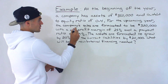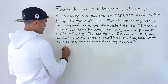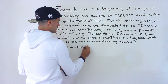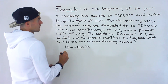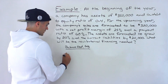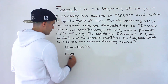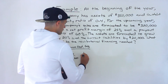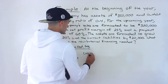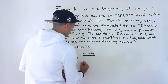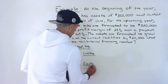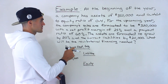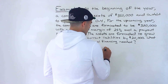Let's start with the beginning of the year balance sheet. We're told the company has assets of $350,000. Notice we're not given the actual numbers for the liabilities or the equity, but we are given the debt-to-equity ratio, and that's enough information to figure out what those dollar amounts are.